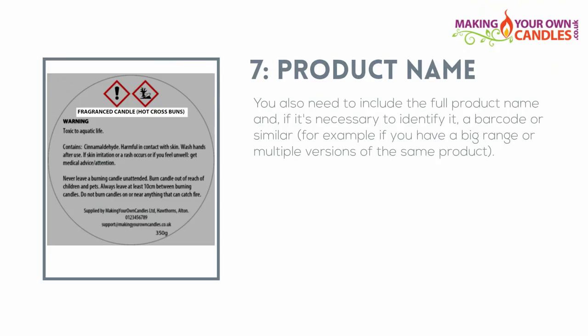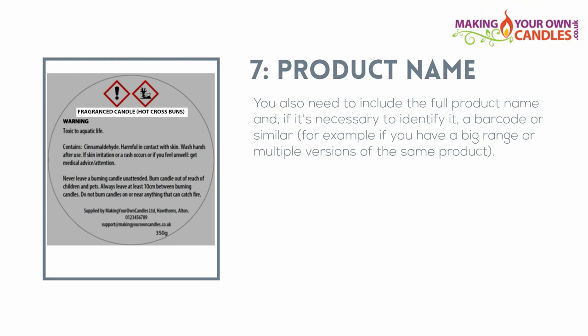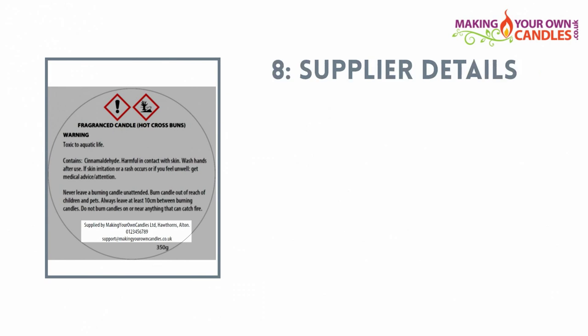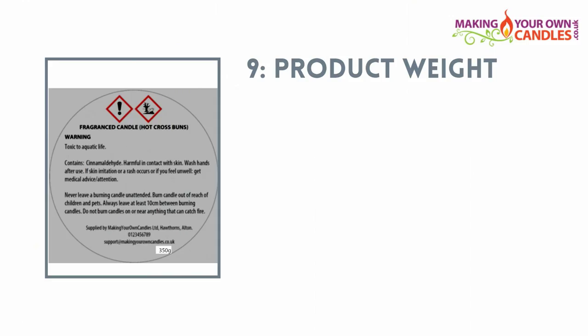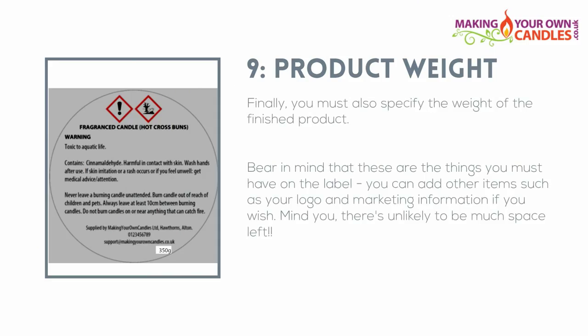You also need to include the full product name and, if necessary, a barcode or similar identifier — for example, if you have a large range or multiple versions of the same product. The regulations also state that you must supply full contact details for yourself as the supplier. Finally, you must also include the product's total weight.